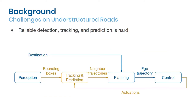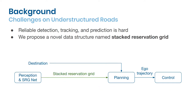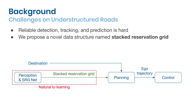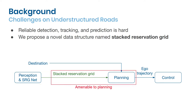If we look at a standard perception, planning, and control pipeline in a standard autonomous vehicle system, we will find out that most of the difficulties of driving in unstructured environments come from tracking and prediction. To address the challenges, we propose a new data structure named Stacked Reservation Grid, or SRG. Introduction of SRG removes the need for precise tracking and prediction. We argue that computing SRG from perception is a natural extension to current deep learning-based computer vision methods. We also describe how SRG can be used out of the box with model predictive control.